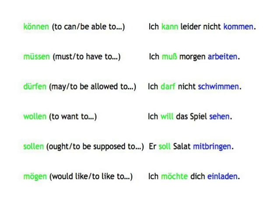The modal verbs in German are: können, meaning 'can / to be able to' — Ich kann leider nicht kommen. Müssen, meaning 'must / to have to' — Ich muss morgen arbeiten. Dürfen, meaning 'may / to be allowed to' — Ich darf nicht schwimmen. Wollen, meaning 'to want to' — Ich will das Spiel sehen. The meanings of können, müssen, dürfen and wollen are more or less unproblematic and mirror their English counterparts: can, must, may and want, both in meaning and use.